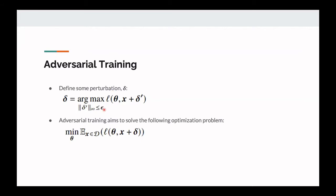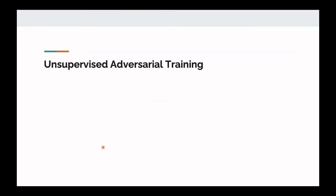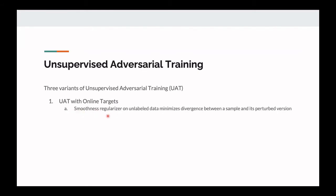These are more or less the functions we've been dealing with this semester — applying perturbations bounded by some epsilon and minimizing the loss for adversarial training. For unsupervised adversarial training, the authors cover some variants discussed in prior works. The first is unsupervised adversarial training with online targets: we apply smoothing on unlabeled data to minimize the divergence between a sample and its perturbed version, smoothing over those perturbations in an unsupervised way.